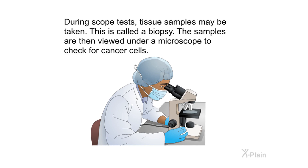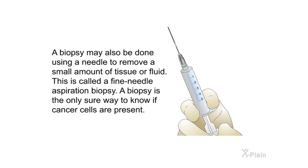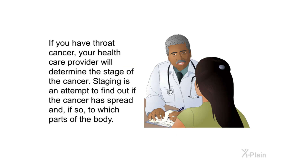During scope tests, tissue samples may be taken — this is called a biopsy. The samples are then viewed under a microscope to check for cancer cells. A biopsy may also be done using a needle to remove a small amount of tissue or fluid; this is called a fine needle aspiration biopsy. A biopsy is the only sure way to know if cancer cells are present.